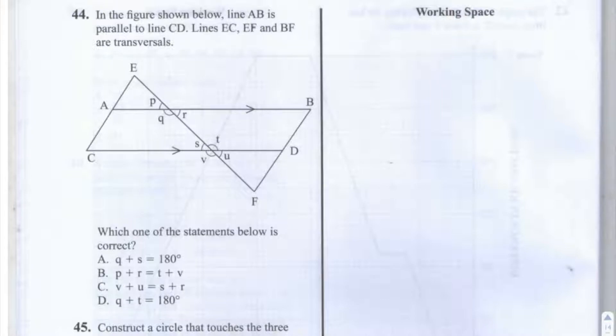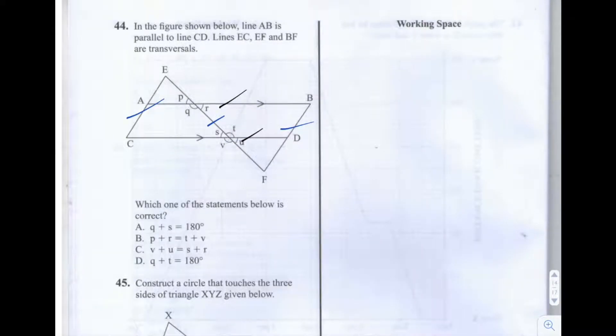Okay, so we know first of all that line AB is parallel to CD, so let's mark on these lines. AB is this line here, and CD is this line here, and we're told that they're parallel. We're also told that EC, EF and BF, so this one here is EF, BF is this line here, and EC is this line here. We're told that these lines are transversals.